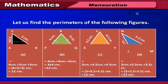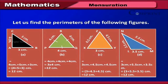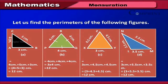Let us find the perimeters of the following figures. A: Perimeter = 4 cm + 5 cm + 3 cm = 12 cm. B: Perimeter = 4 cm + 4 cm + 4 cm = 3 × 4 cm = 12 cm. C: Perimeter = 3 cm + 4.5 cm + 4.5 cm = 12 cm. D: Perimeter = 3 cm + 5.5 cm + 3.5 cm = 12 cm.